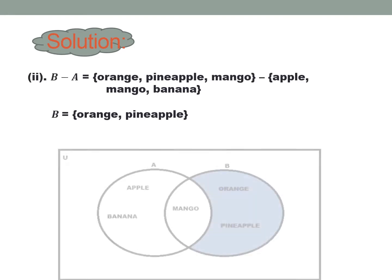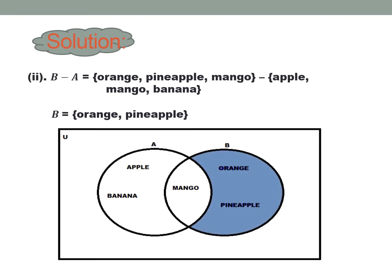Solution number two: B minus A — elements of B that are not found in A. Elements of B are orange, pineapple, and mango, minus the elements of A, which are apple, mango, and banana. So their common element is mango. Therefore, B minus A is equal to the remaining elements of B, which are orange and pineapple.